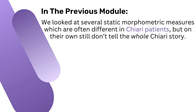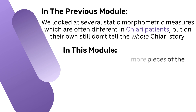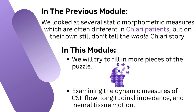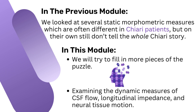In the previous module, we looked at several static morphometric measures, which are often different in Chiari patients, but on their own still don't tell the whole Chiari story. In this module, we will try to fill in more pieces of the puzzle by examining the dynamic measures of CSF flow, longitudinal impedance, and neural tissue motion.